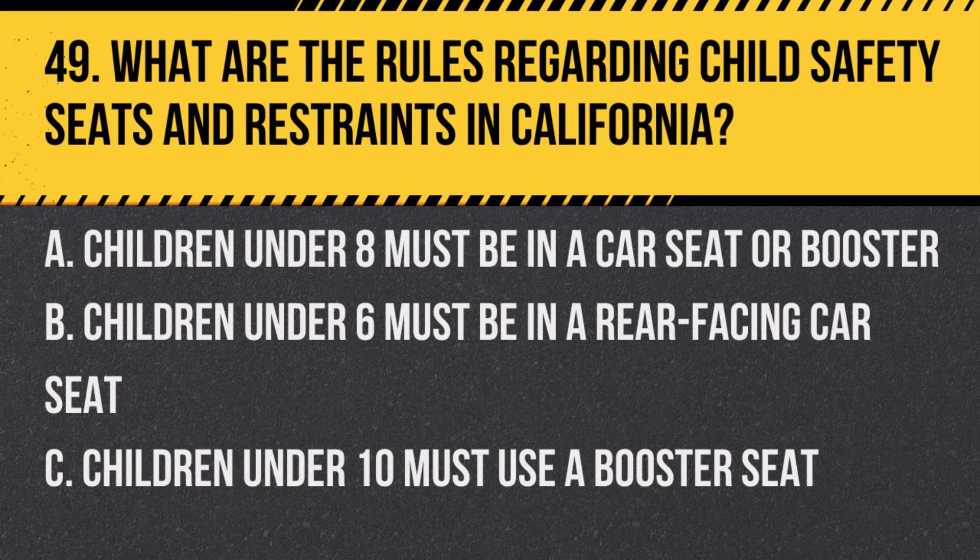Question 49: What are the rules regarding child safety seats and restraints in California? A. Children under 8 must be in a car seat or booster. B. Children under 6 must be in a rear-facing car seat. C. Children under 10 must use a booster seat. Answer: A. Children under 8 must be in a car seat or booster. In California, children under 8 years old must be secured in a car seat or booster seat in the back seat.